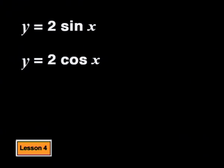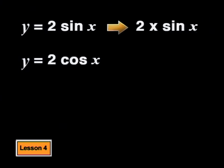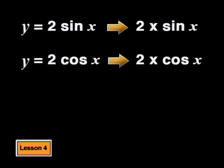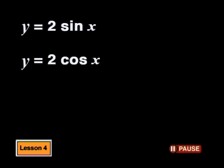So now we have y equals 2·sine(x) and y equals 2·cos(x). Be careful here: 2·sine(x) means 2 times the whole of sine(x), and 2·cos(x) means 2 times the whole of cosine(x). You can't separate the angle x from the sine or cosine ratio. What effect do you think the 2 is going to have on each graph? How will the 2 change the parent graph?